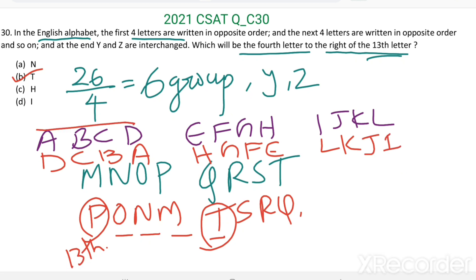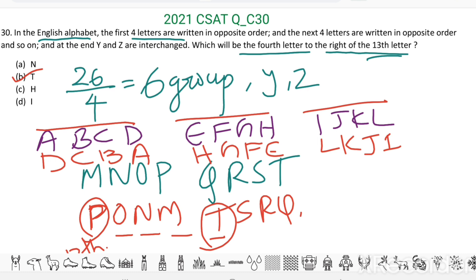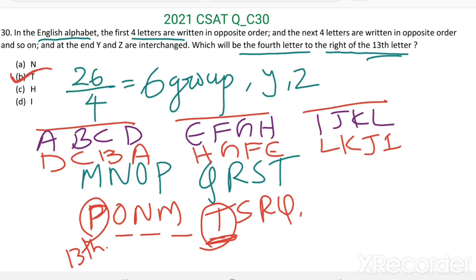So 4, 8, 12, 13th letter is P. Then the fourth letter to the right of the thirteenth letter is T. Option B is the right answer. Thank you.